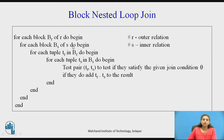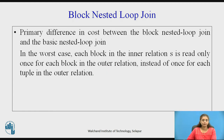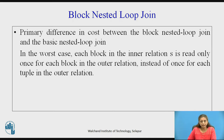Once this comparison is finished, the next block of relation R will be read and compared with all the tuples from all the blocks of relation S. So instead of bringing only one tuple of relation R and comparing with all tuples of relation S, we are bringing blocks of relations R and S and comparing tuple by tuple. The primary difference in cost is that in nested loop join the comparison was against tuples, whereas here it is comparisons against blocks.